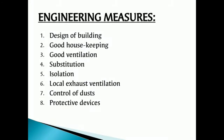Engineering measures include design of building, good housekeeping, good ventilation, substitution, isolation, local exhaust ventilation, control of dust, and use of protective devices. Adopting all these engineering measures in the working area may help prevent occupational diseases.